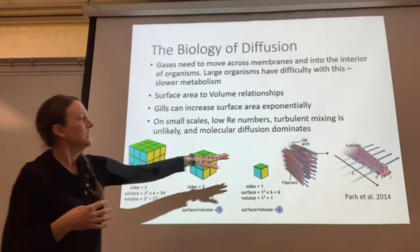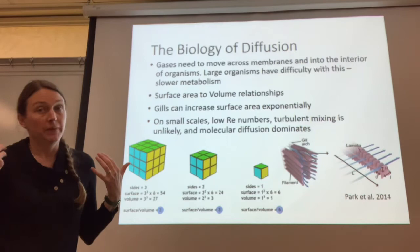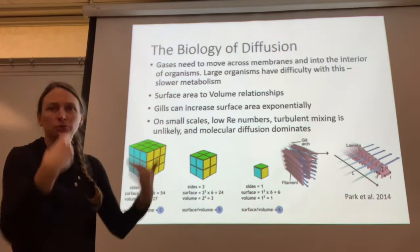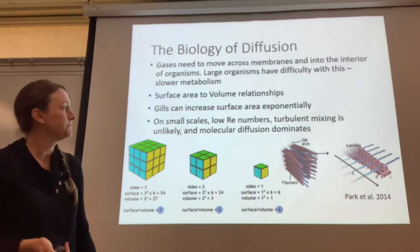This is why gills look the way they do — lots of little nooks and crannies for the gill to interact with dissolved gases. On a small scale, at low Reynolds numbers, turbulent mixing is unlikely and molecular diffusion dominates. But at larger scales, you can swim through the water fast to promote oxygen transfer past your gills, or caddisflies will undulate inside their cases to move water past their gills and increase rates of diffusion.